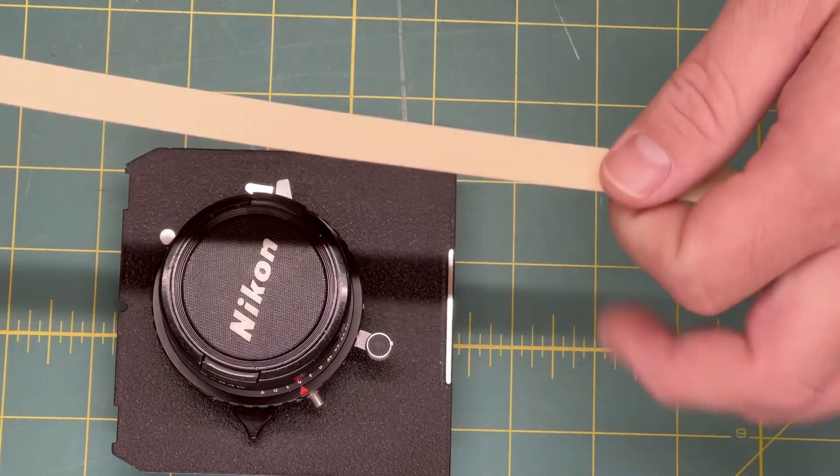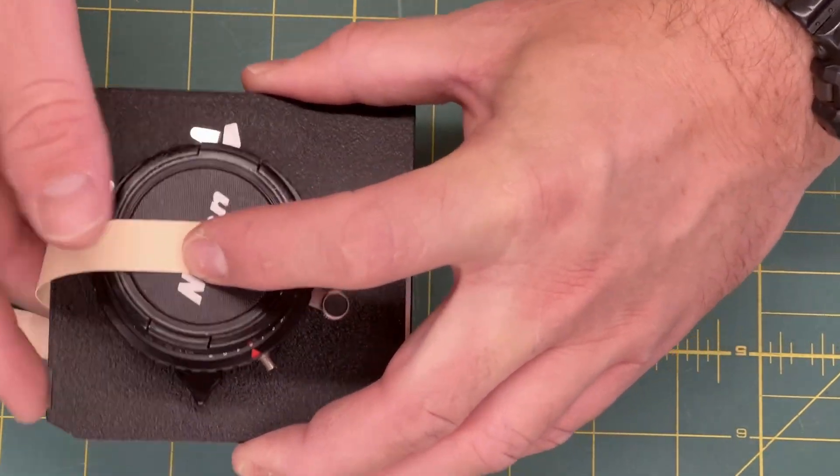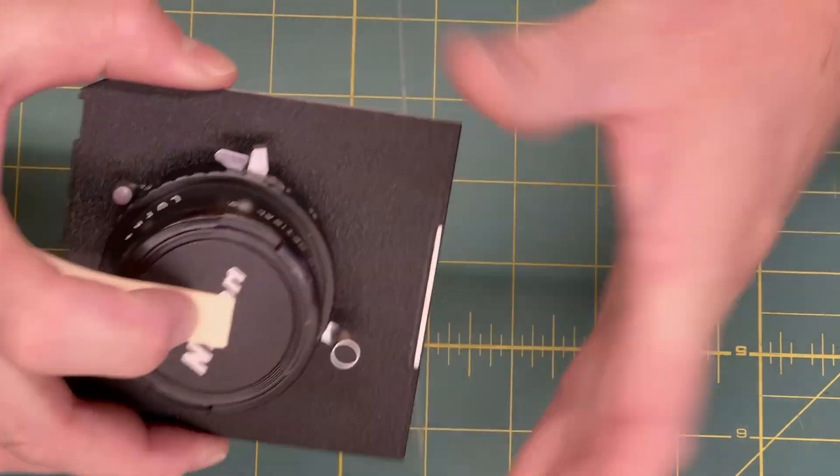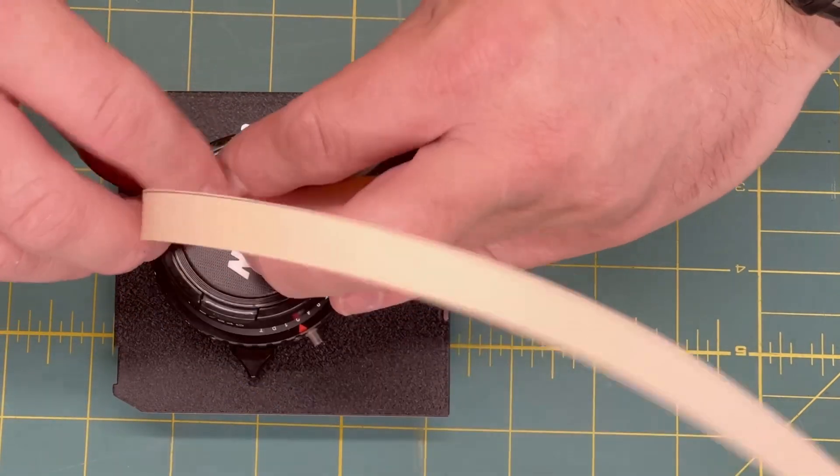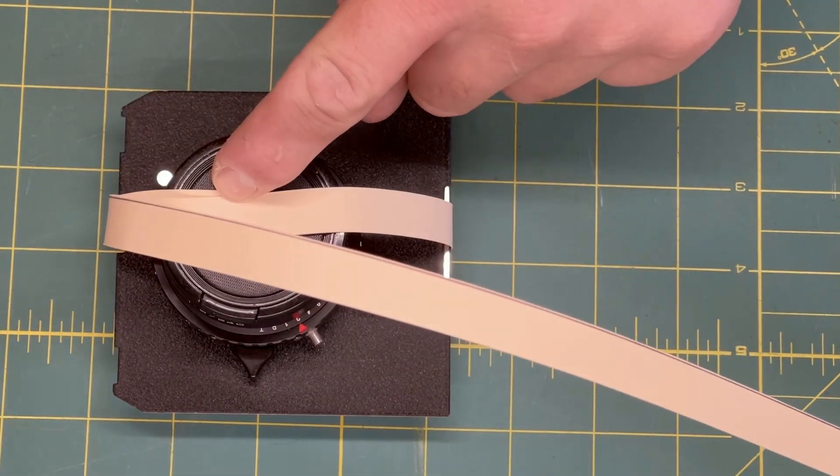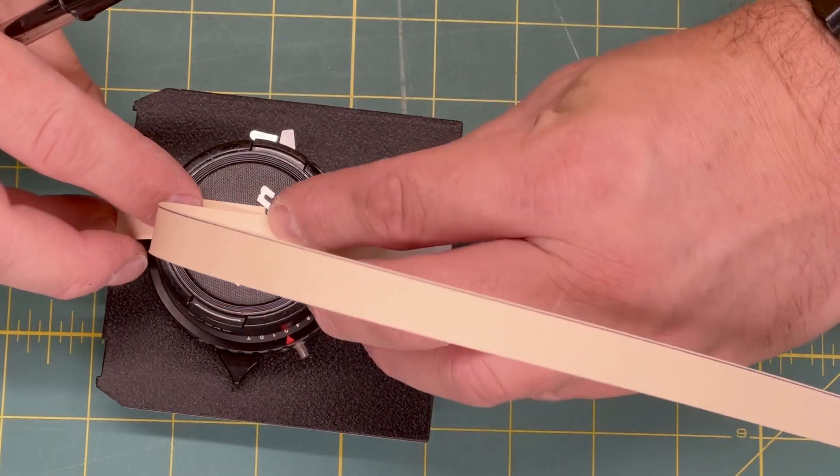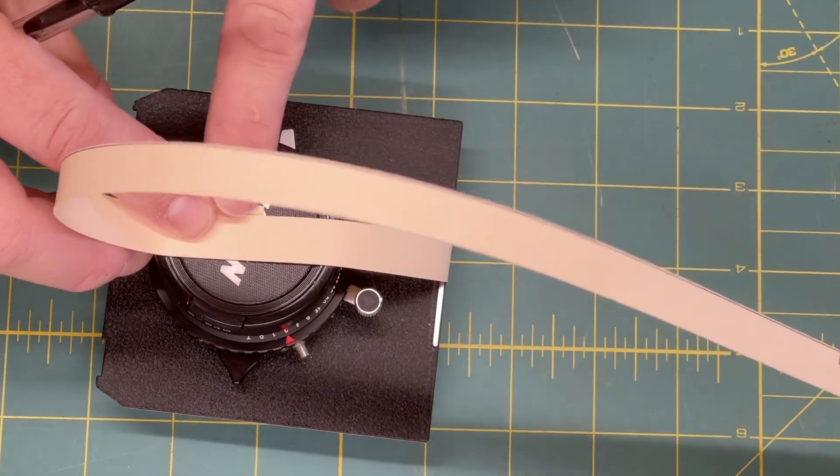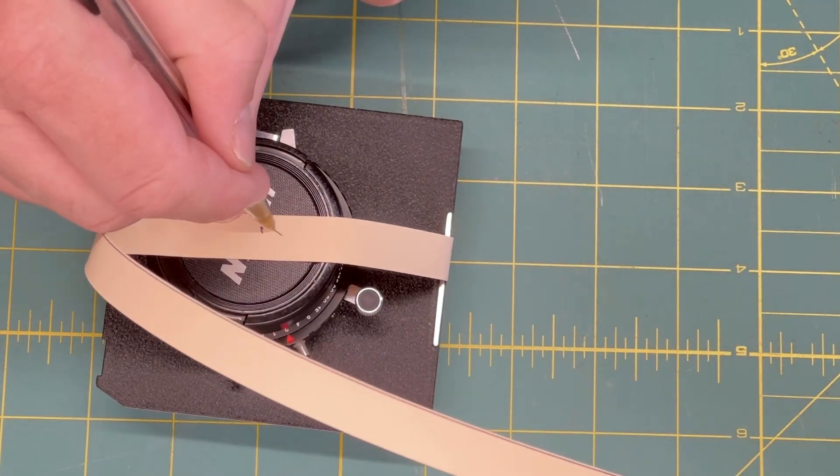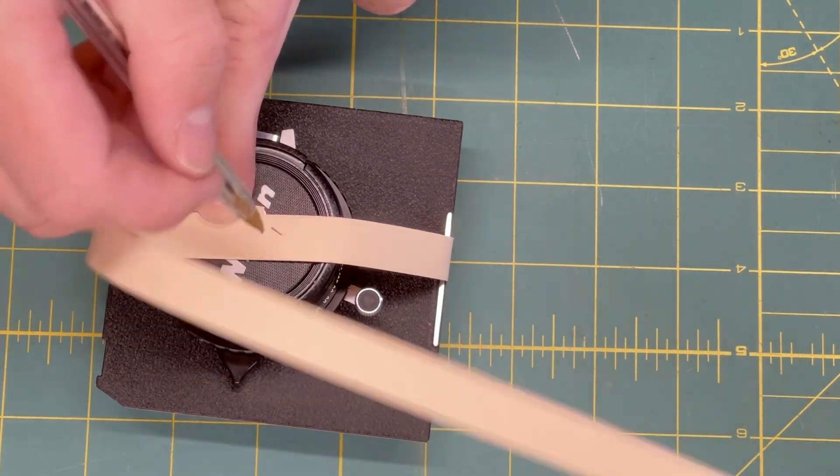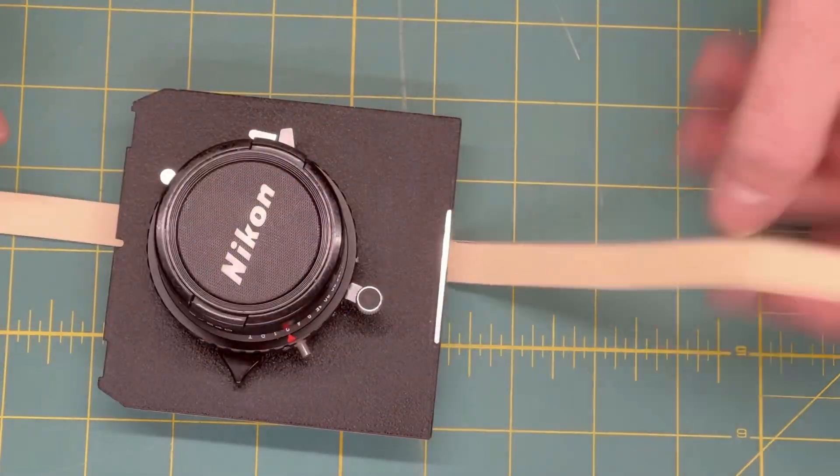Then you basically just do the same thing. Just hold it, wrap it around, and then get yourself a pen. Remember, you just want this to not be super super tight, you just want to basically have most of the slack taken out of it. Make yourself a measurement. I'm going to call that one, so then I know what the opposite side is.